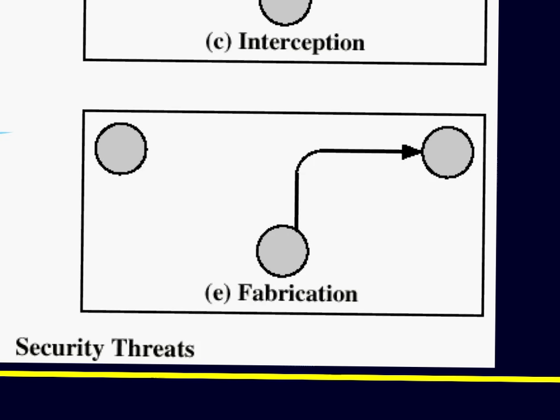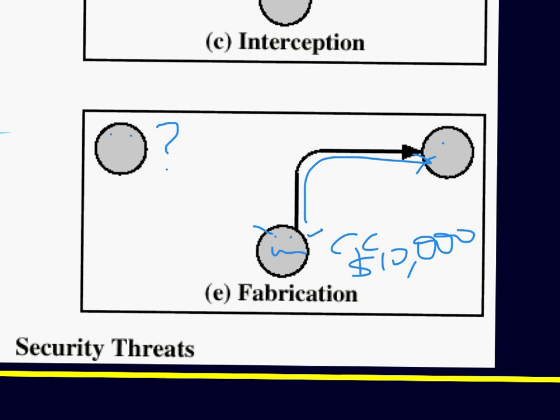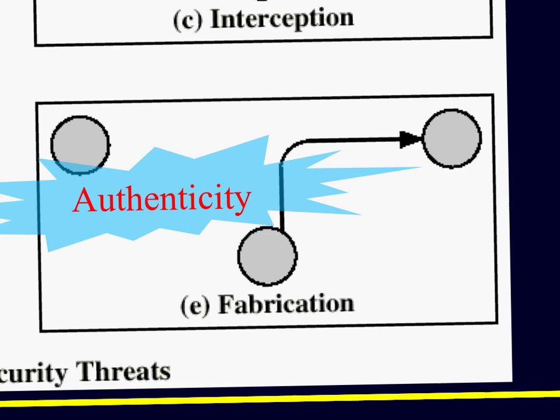The next type of attack is fabrication. Mr. Evil makes a fake credit card transaction for $10,000 into an account, without you being involved at all. That's a fabrication attack — an authenticity attack where somebody has stolen your identity, perhaps just your credit card details, and made use of your money. This typically happens when people look over your shoulder and see you typing in your credit card number, expiry date, and the three-digit CVV code, or read your PIN number at an ATM.